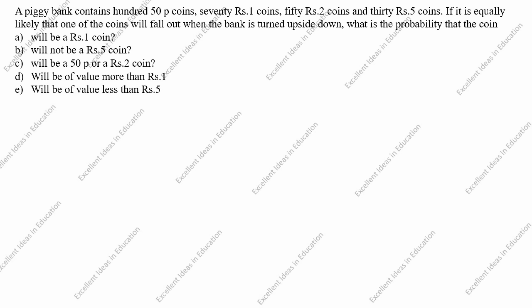Hi students, welcome to my channel 'Excellent Ideas in Education.' Today we are going to solve this probability problem. A piggy bank contains coins: 70 rupee 1 coins, 50 rupee 2 coins, and 30 rupee 5 coins. It is equally likely that one of the coins will fall out when the bank is turned upside down. What is the probability that the coin — first question — will be a rupee 1 coin?